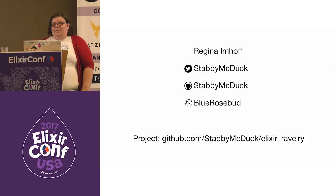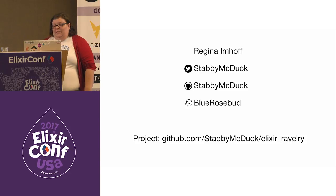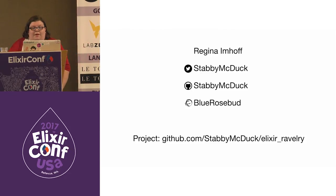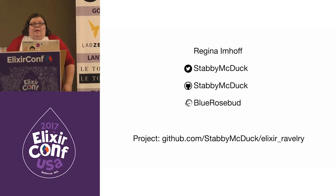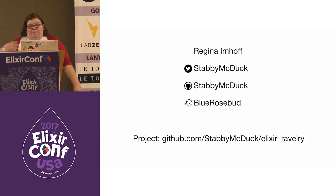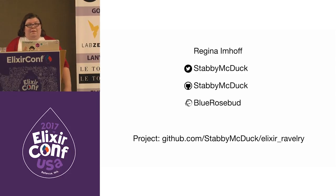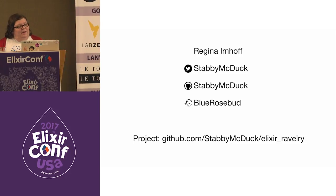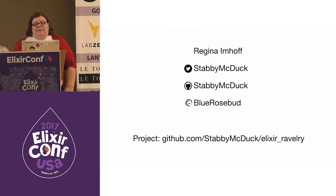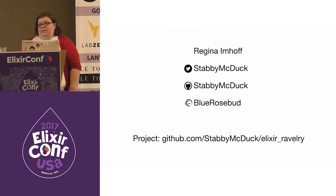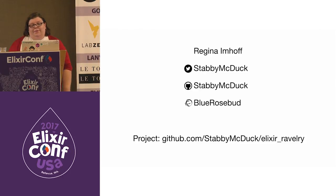I'm Regina Imhoff. I live in Austin, Texas. I'm a freelance mobile developer, and I'm also a knitter and a spinner in addition to coding, and I'm happy to bring all those things together. I can be found on Twitter and GitHub as Stabby McDuck, and on Ravelry as BlueRosebud, and if you know the joke, five internet points for you.